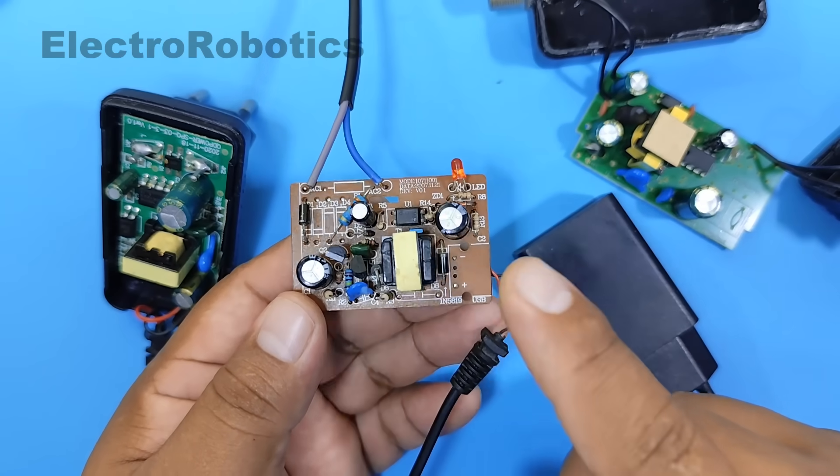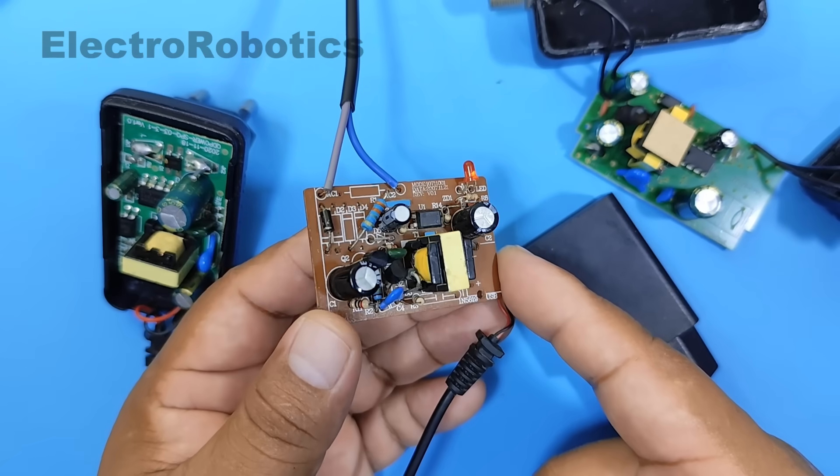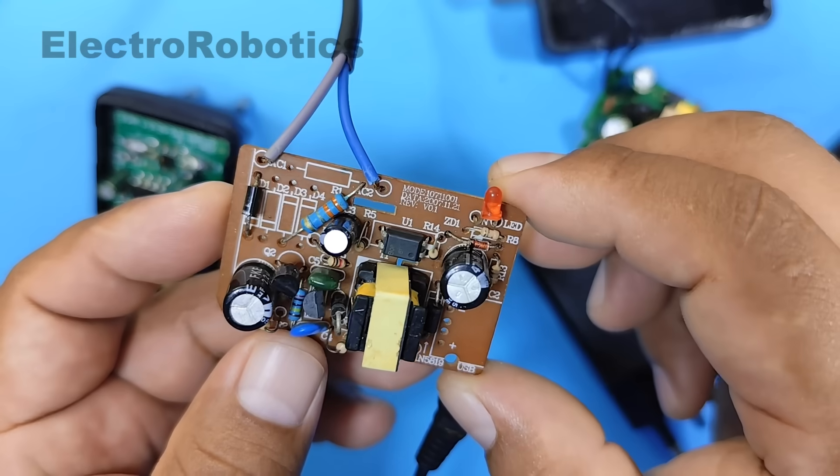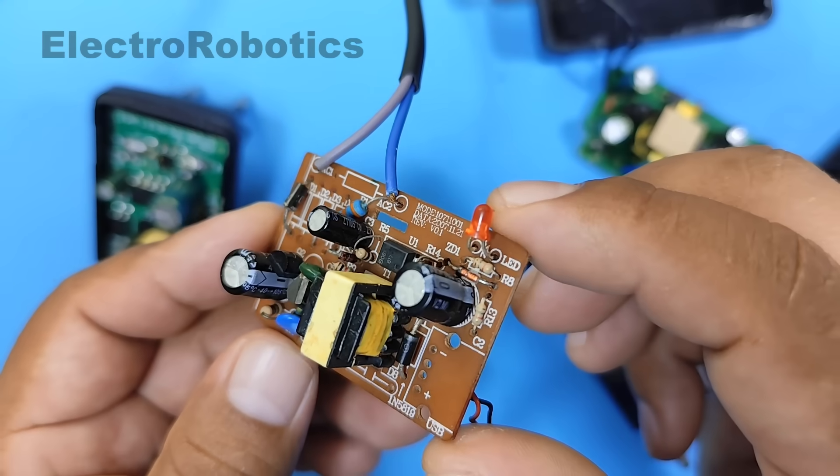This way, we'll be able to vary the voltage from 5 volts to 12 volts, from 12 volts to 30 volts, with a fairly simple method which you can do at home without any complications.